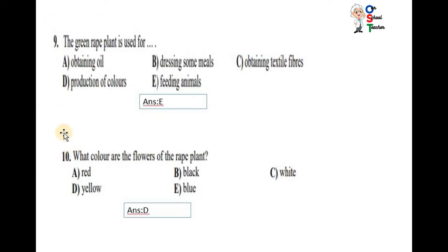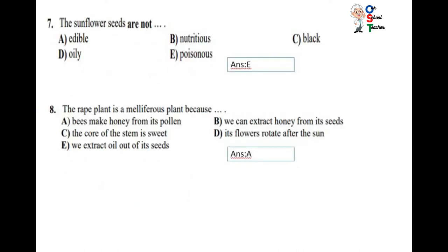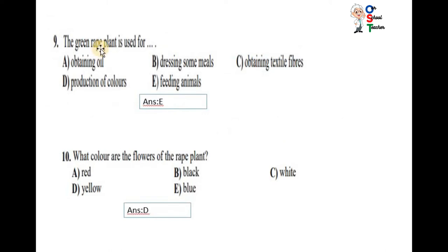Now question number 9. The green rape plant is used for obtaining oil, tracing some meals, obtaining textile fiber, or production of the sun? The green rape plant is used for feeding animals. What color are the flowers of the rape plant? Red, yellow, black, blue, white. You can see they were yellow. Answer D is correct.